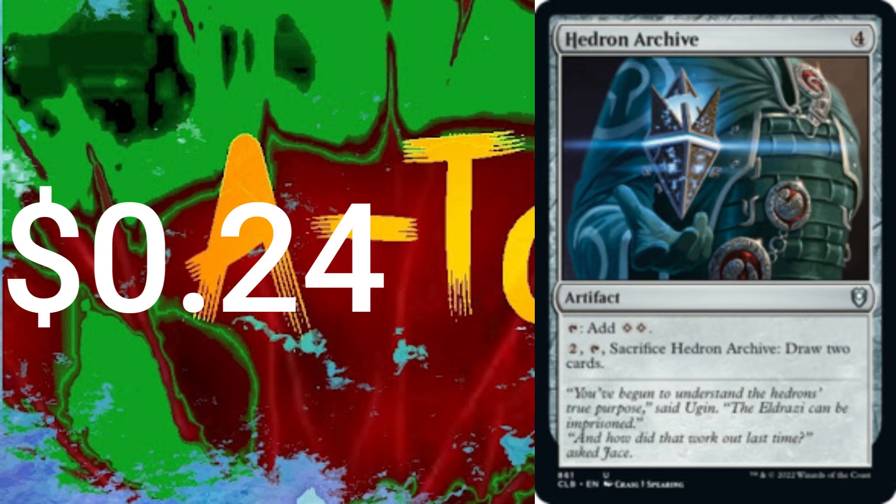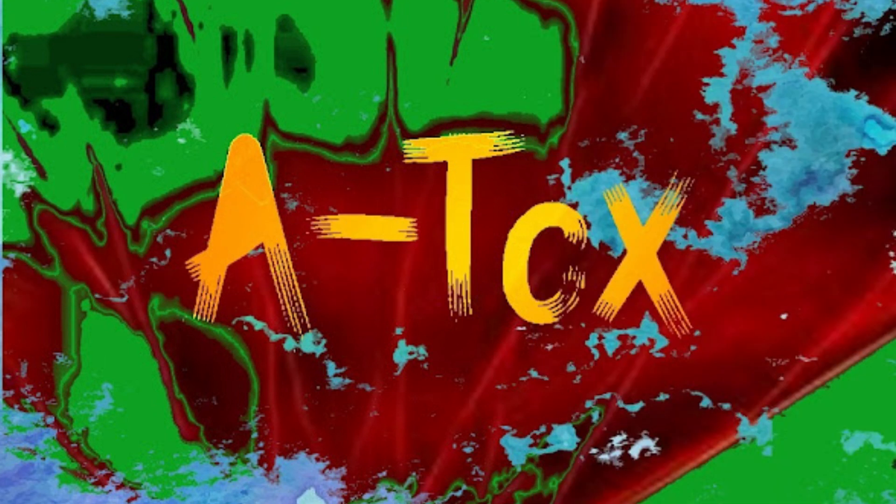Hedron Archive, Worldslayer, and Cauldron of Eternity. We gotta have that Worldslayer and Avacyn Angel of Hope combo. Because how are we gonna lose friends without that? There's the six enchantments. Inheritance.